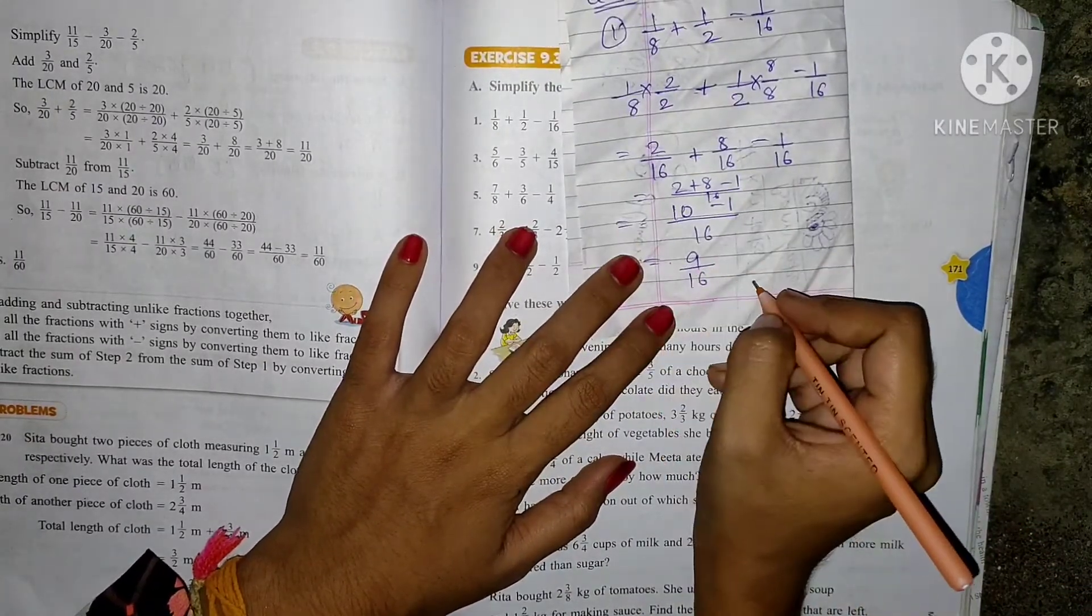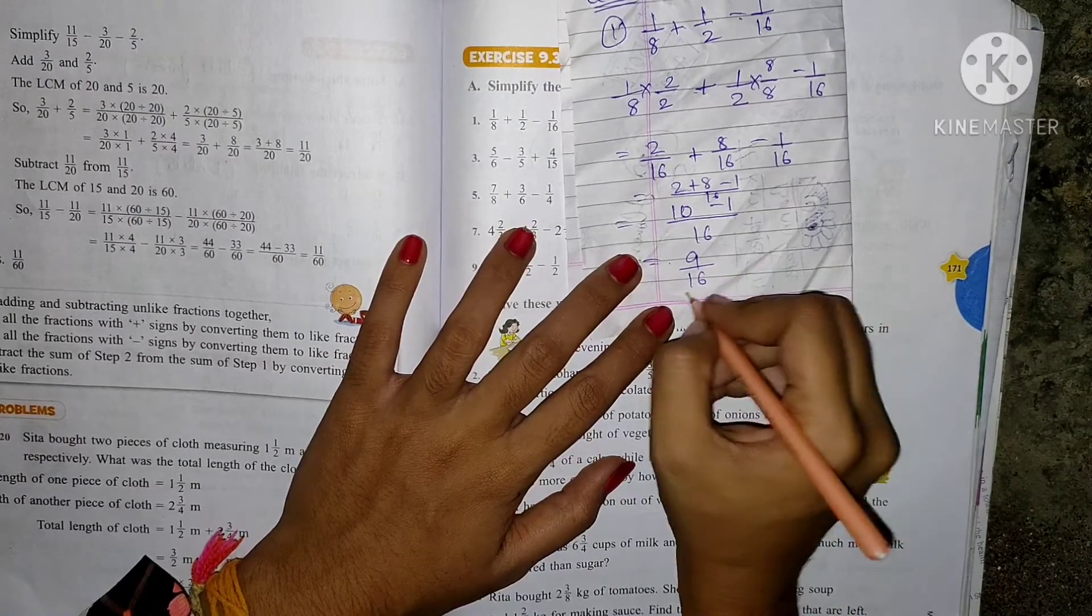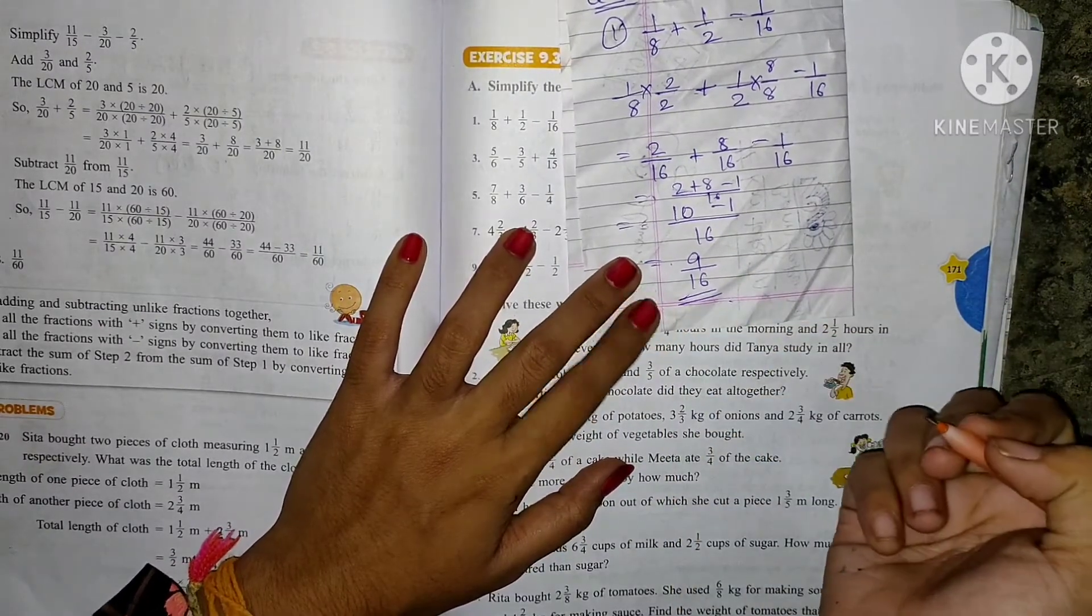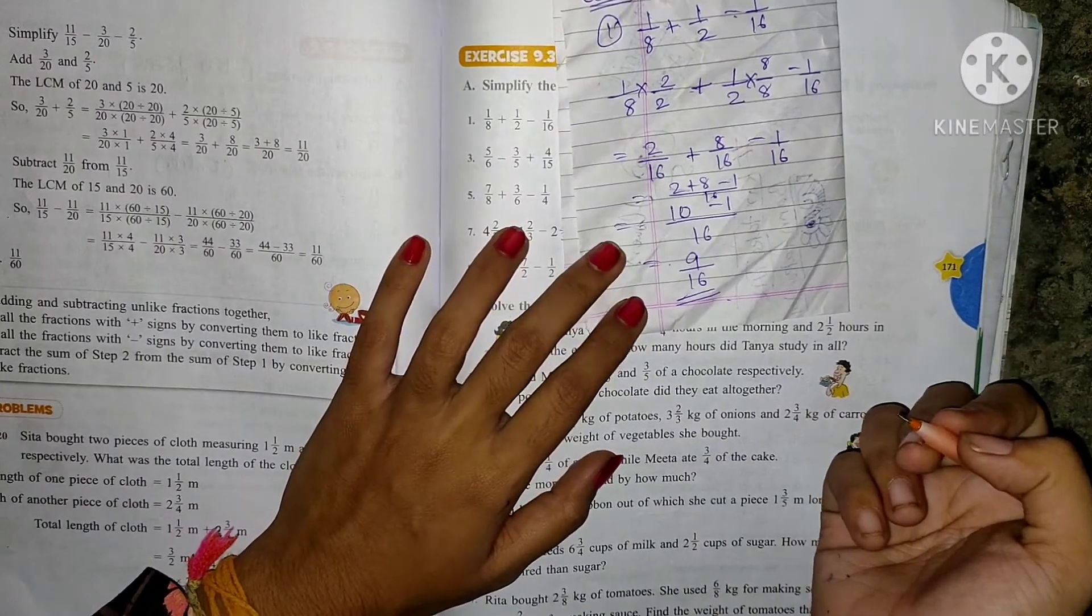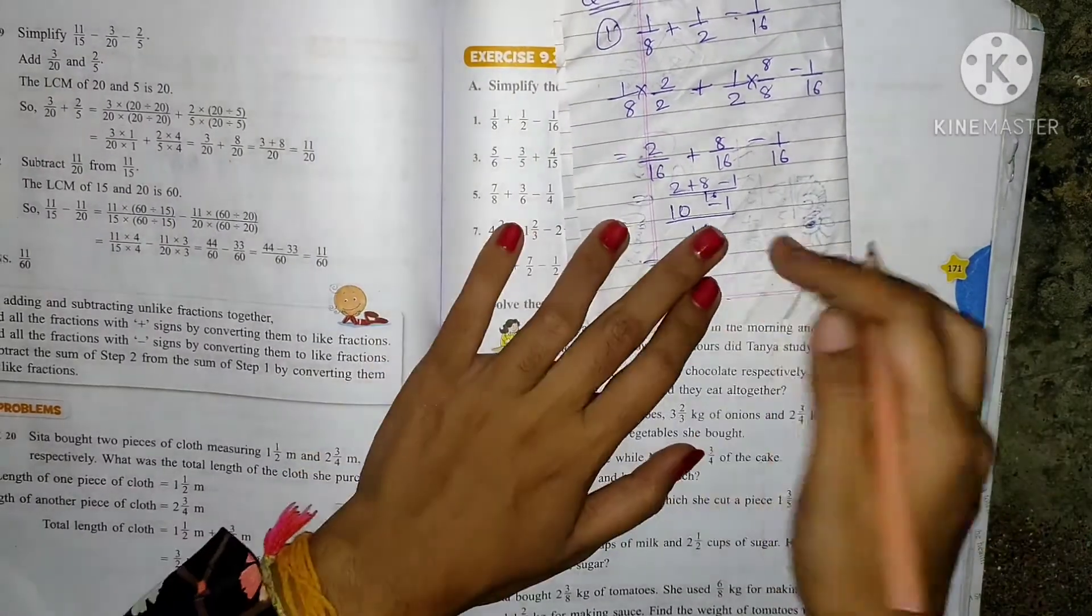Now tell me, do both come in the same table? They don't come. So both these values are different. Because of this, your final answer will be 9 by 16. Okay. Now students,